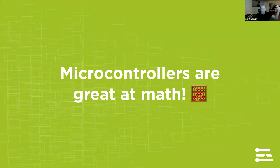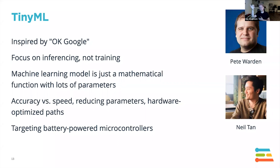A typical Cortex-M4 running at 80 MHz can do a few million operations a second on 8-bit integers. The interesting realization — driven by Pete Warden at Google and Neil Tan at Arm — is that while the training phase of machine learning takes lots of time and compute, if you focus on the inferencing — just executing the formula — you can do that really efficiently on microcontrollers, especially for sensor-based use cases with relatively short data.